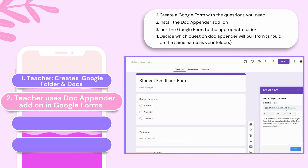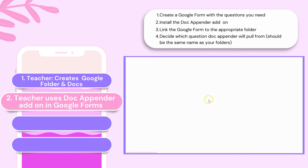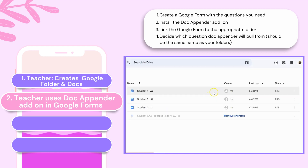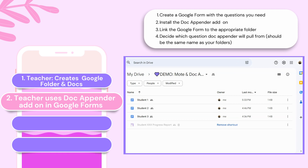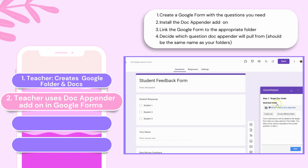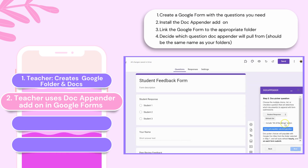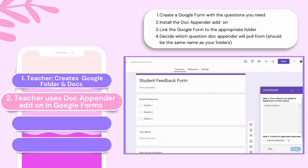Once ready, go to the top right corner, click the puzzle piece and choose add-ons. Search for Docupender and install. You'll see a puzzle piece icon — click it again and select Docupender. Choose the folder you created earlier and then the individual Google Doc you want to append. Finally, select the questions from your form you'd like to append and set your preferred format.